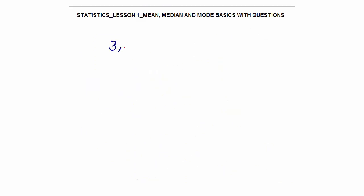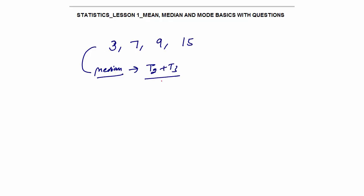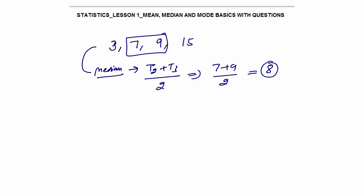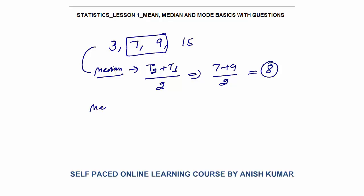When you have an even number of data points — say 3, 7, 9, 15, already arranged in ascending order — what will the median be? The median is the average of the two middle terms: term number 2 plus term number 3 divided by 2. So 7 plus 9 divided by 2 equals 16 divided by 2 equals 8. So 8 is the median. In summary, the median is simply the middle term after arranging data in ascending or descending order.